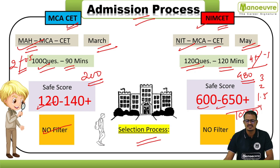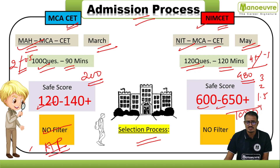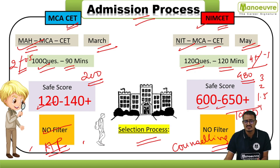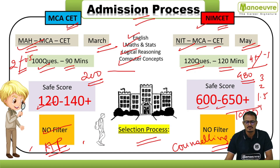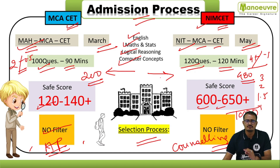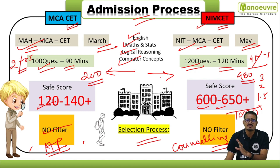Regarding the selection process, there is no filtration on either side. Both have a counseling process — for MCA CET it is called the CAP round (Common Admission Process), and for NIMCET it is the counseling process. In MCA CET you give college preferences; similarly in NIMCET you give NIT preferences. Key sections for both exams are English, Math and Statistics, Logical Reasoning, and Computer Awareness.